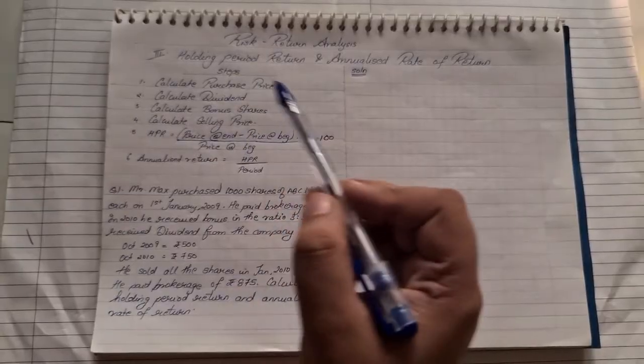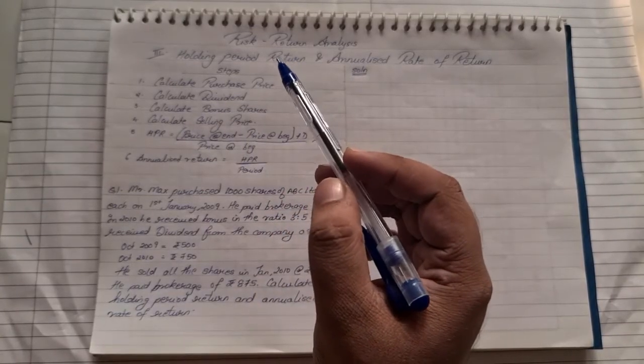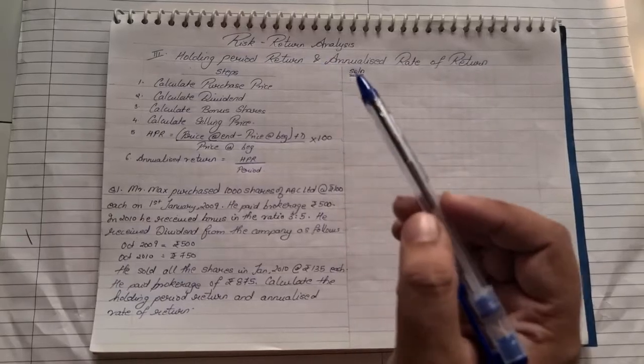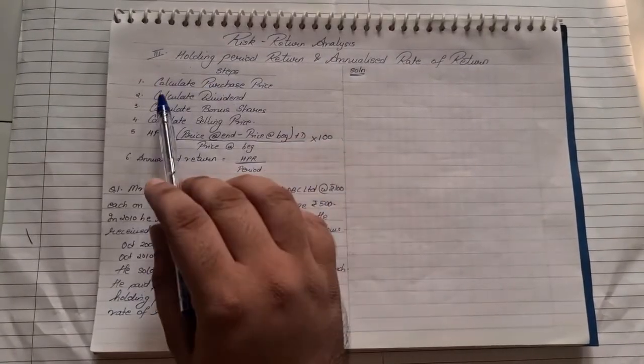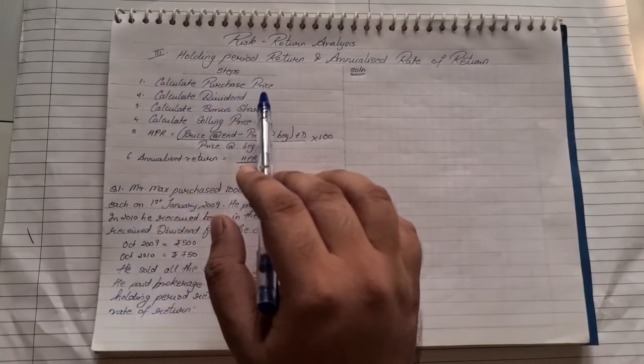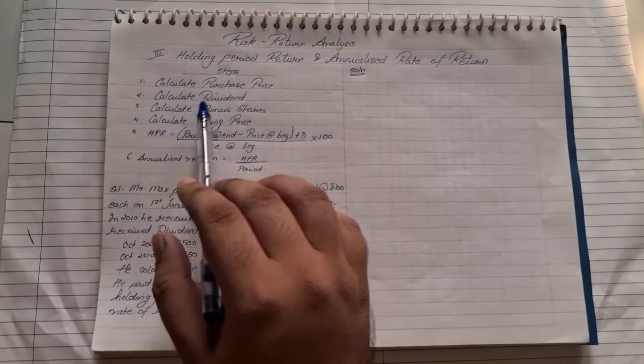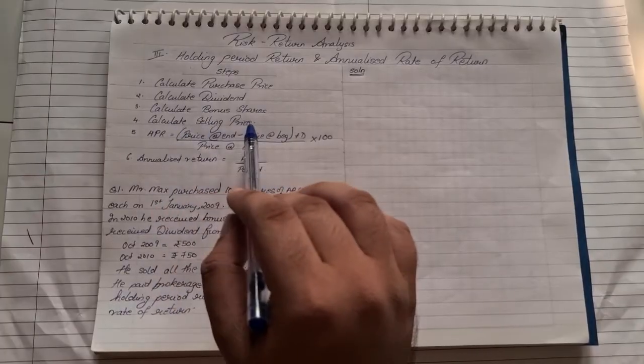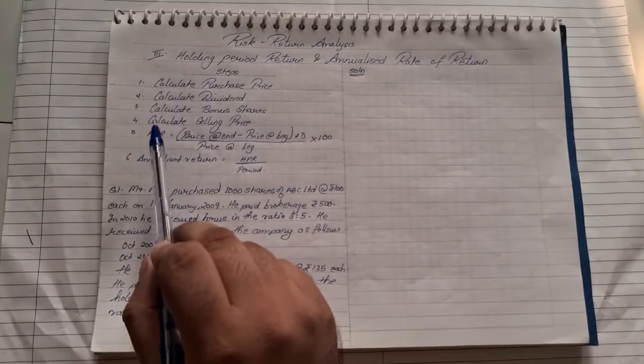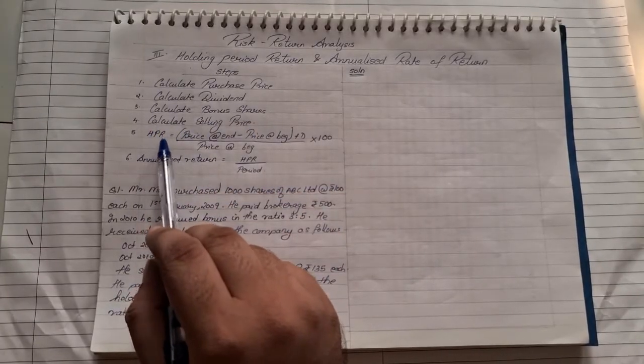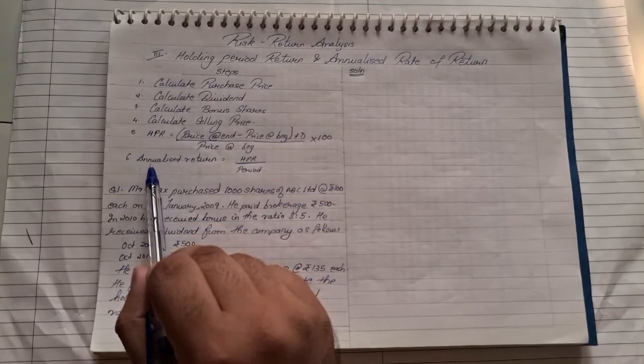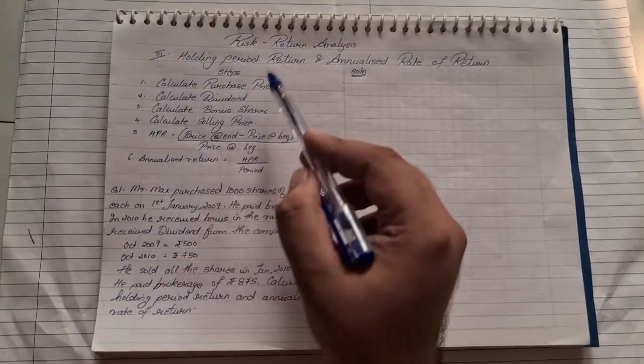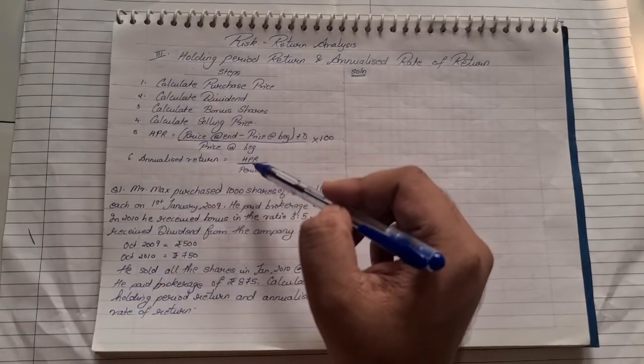Now, in order to solve the sum first, let us see what are the various steps that are required to be considered before solving the sum. So the steps are: first, you need to calculate the purchase price. Second, you calculate the dividend. Third, the bonus. Fourth, the selling price. Fifth, we use the formula for finding holding period return. And last, we find the annualized rate of return.